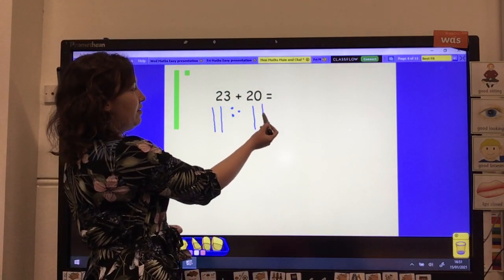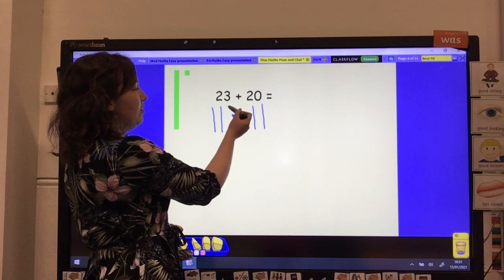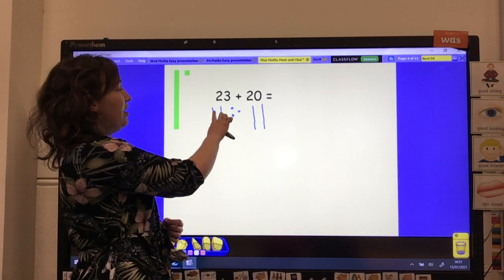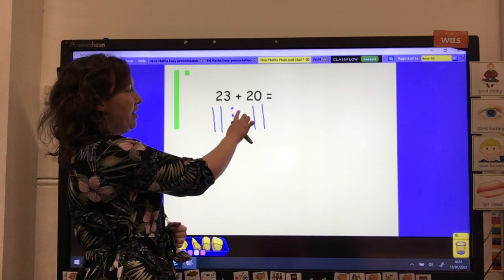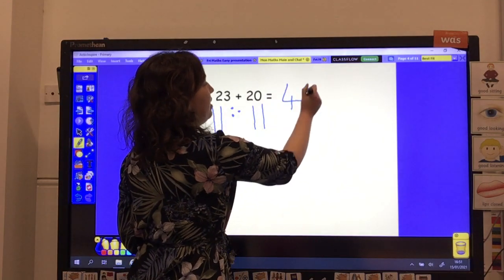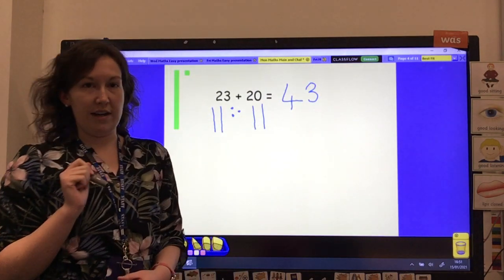10, 20, 30, 40. 40, 41, 42, 43. Or we could do 10, 20, 21, 22, 23, 33, 43. Either way, you will work out the correct answer.